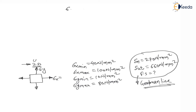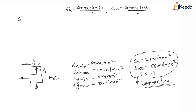The formulas are: stress amplitude = (maximum stress − minimum stress) / 2, and mean stress = (maximum stress + minimum stress) / 2. For the x-direction, the stress amplitude σxa = (100 − 40) / 2 = 30 MPa.